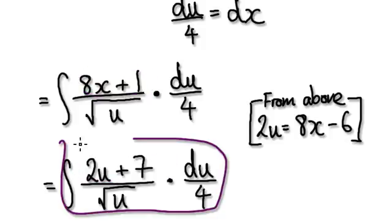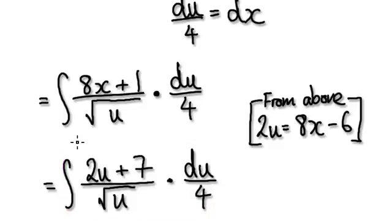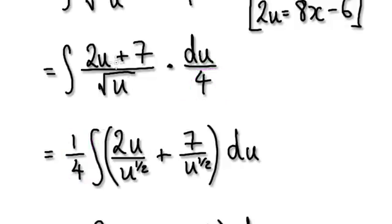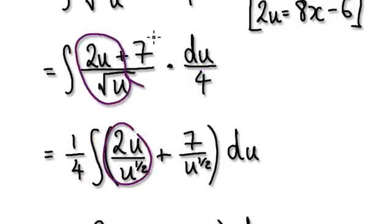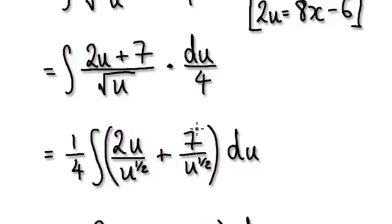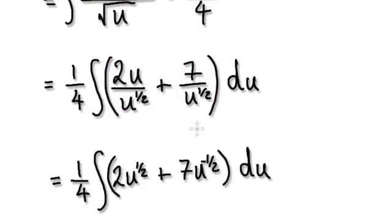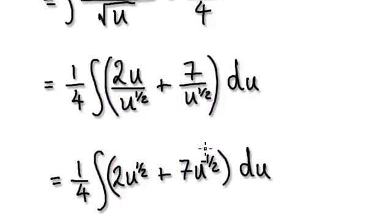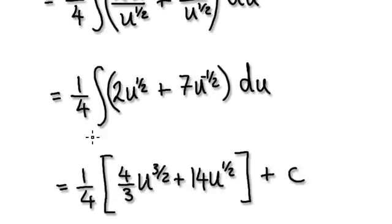And then that will take you to here. And then now factor out the 4. That will give you this. And break this up — this is one fraction and this is another fraction here. Then rewrite this as this, and rewrite this as this. Now just integrate. That will give you this.